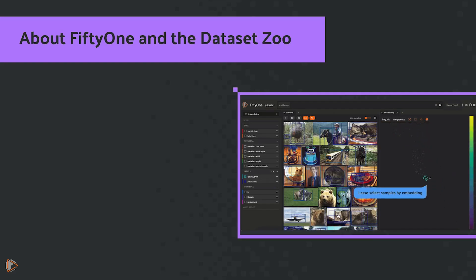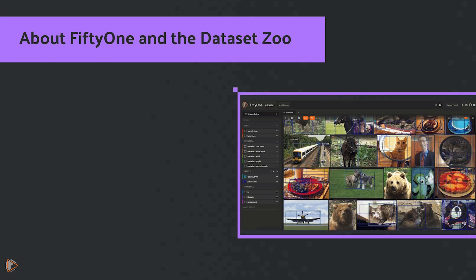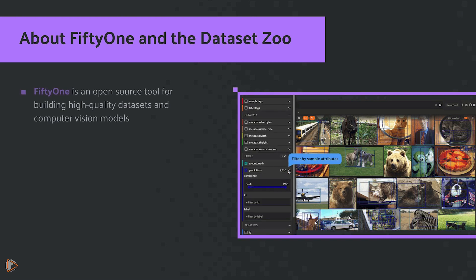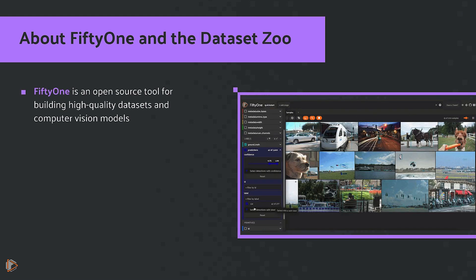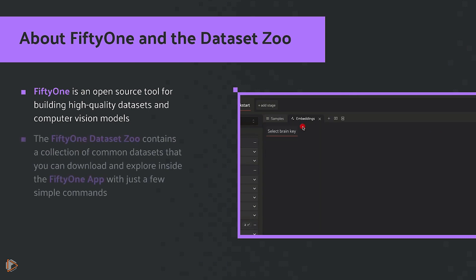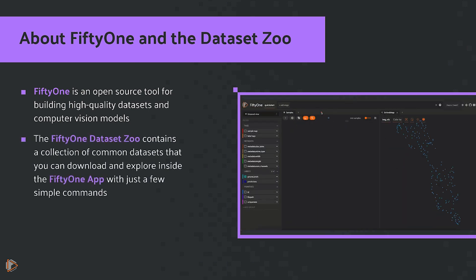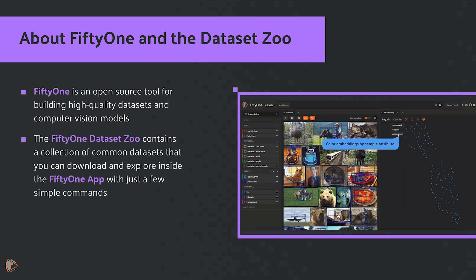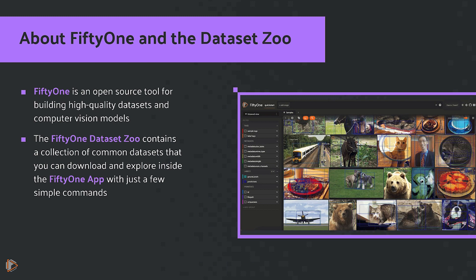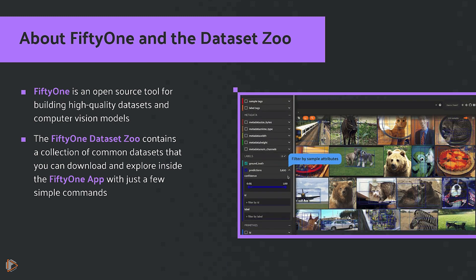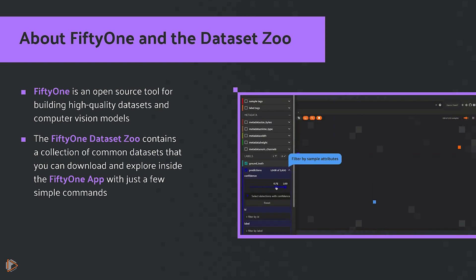If you're new to FiftyOne and the Dataset Zoo, FiftyOne is an open-source tool for building high-quality datasets and computer vision models. The FiftyOne Dataset Zoo contains a collection of common datasets that you can download and explore inside the FiftyOne app with just a few simple commands.